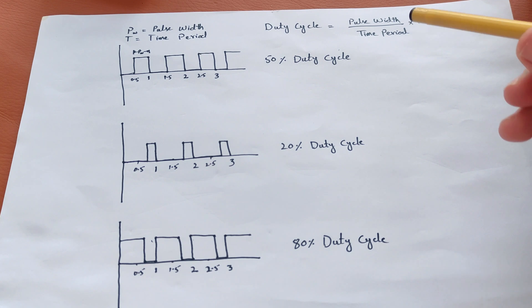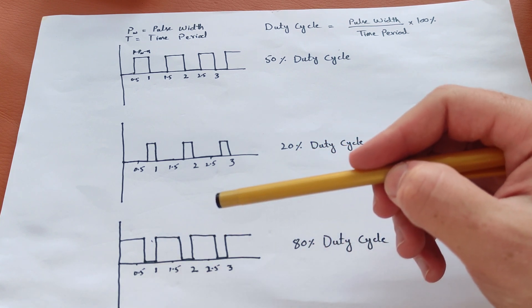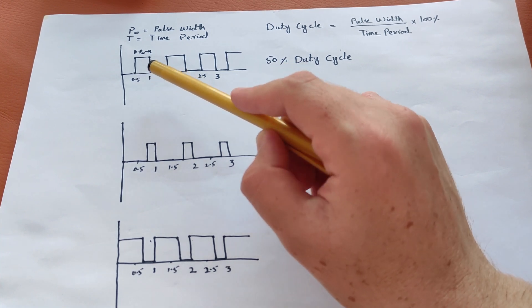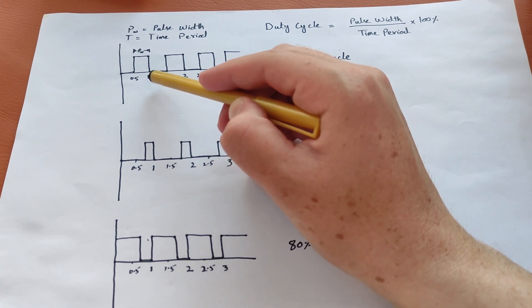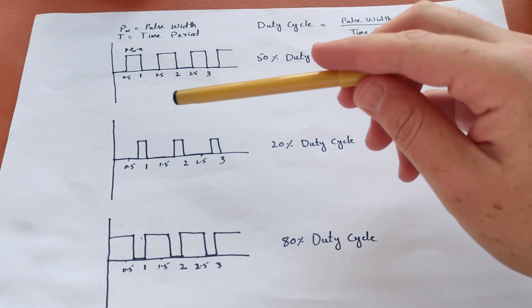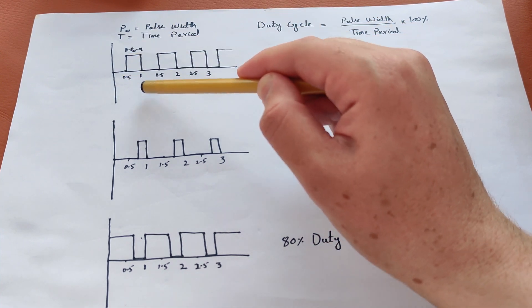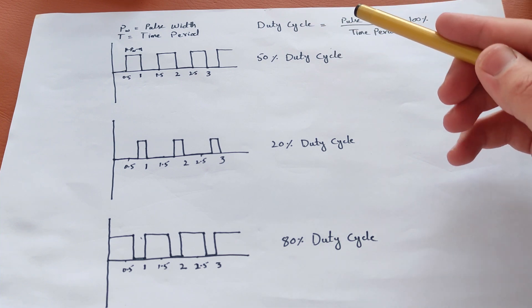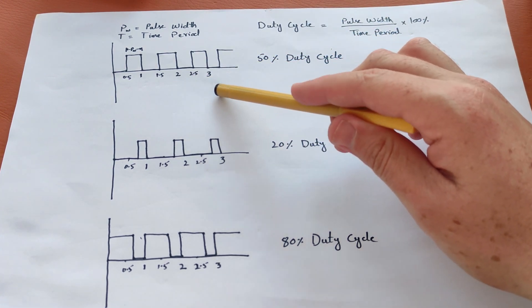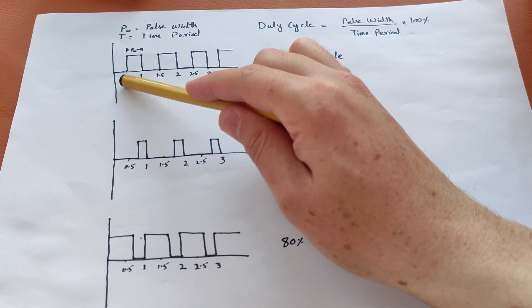Now let's look at pulse width. Pulse width is the time for which the pulse is high — meaning it is giving us 5 volts. For the first signal, it is high for 0.5 seconds. Time period is the time taken by one complete signal, which is one second. The duty cycle is pulse width divided by time period, multiplied by 100%. The first signal has a duty cycle of 50%, meaning it is on for 0.5 seconds and off for 0.5 seconds.